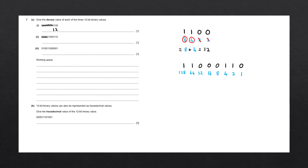Starting at the left, we circle the numbers that have a 1 and cancel out those that have a 0. First number is a 1, so we circle 128. Second, circle 64. Third, cancel 32. Fourth, cancel 16. Cancel 8. Circle 4. Circle 2 and cancel 1. We're left with the sum: 128 plus 64 plus 4 plus 2, which gives us 198.